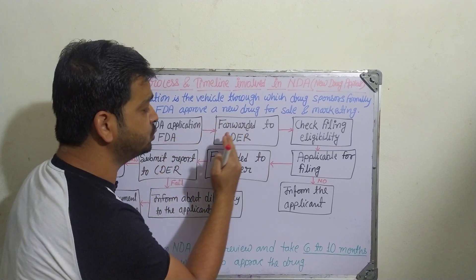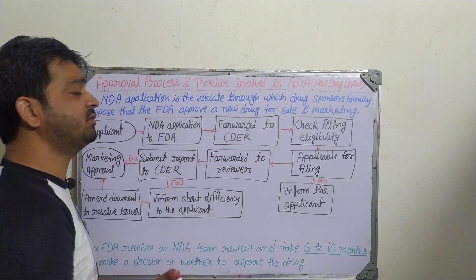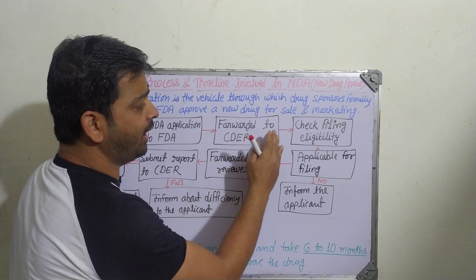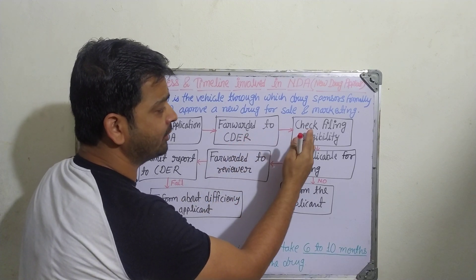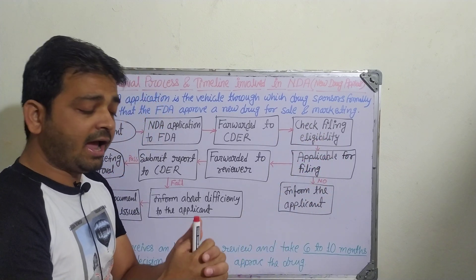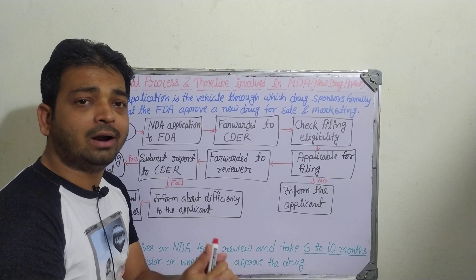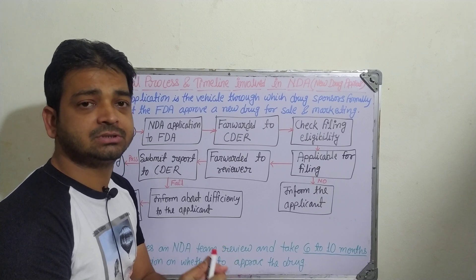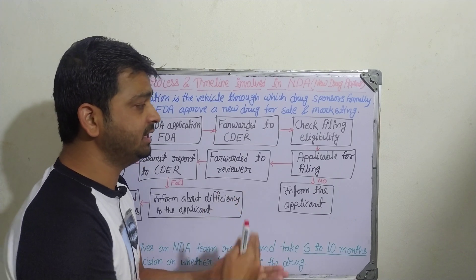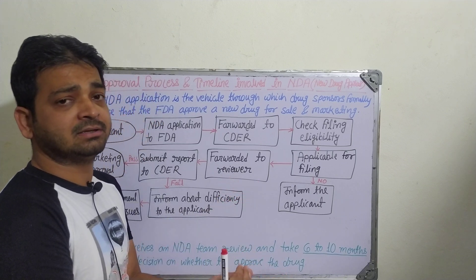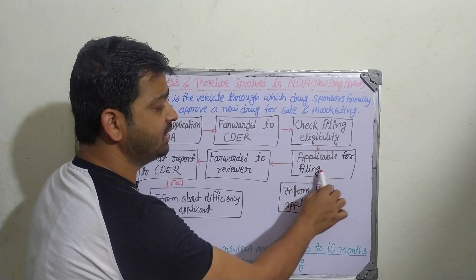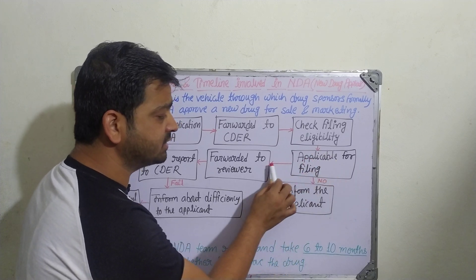The application will be forwarded to the CDER — Center for Drug Evaluation and Research — where it will be reviewed. They are going to check the filing eligibility: whether the drug has all the required evidence and documentation. If the application is eligible for filing, they can proceed further.